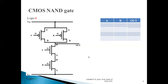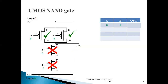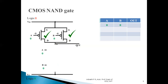Let us verify Case 1: A=0, B=0, expected output is 1. When A=0 and B=0, both PMOS transistors P1 and P2 turn on (gate logic is 0), while both NMOS transistors N1 and N2 turn off. Because N1 and N2 are off, they act as open switches — there is no connection between logic level 0 and the output. Because P1 and P2 are on, there is a definite connection from VDD through source to drain to output. Hence logic level 1 is transferred to the output, and output is high.